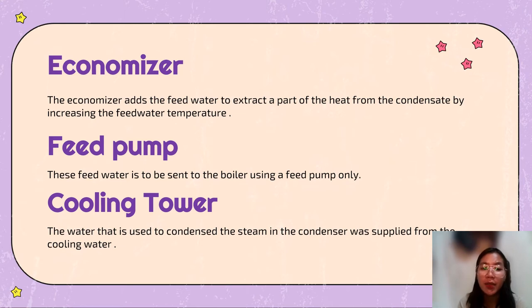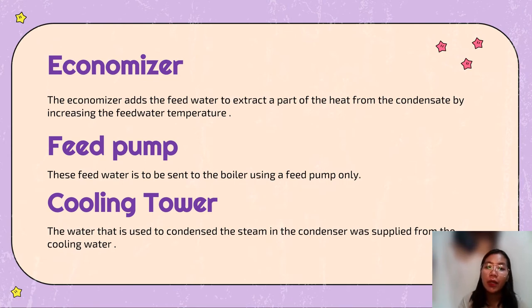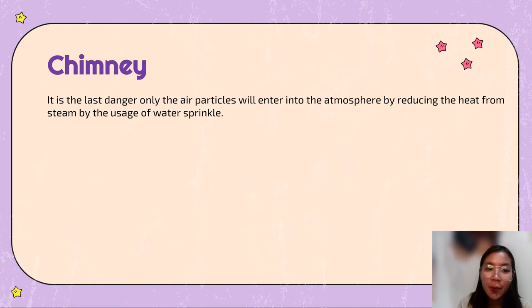The next one is the feed pump. This feed water is to be sent to the boiler using a feed pump. Then we have the cooling tower. The water that is used to condense the steam in the condenser is supplied from the cooling tower. Then we have the chimney. The air particles will enter into the atmosphere by reducing the heat from the steam by usage of a water sprinkler.